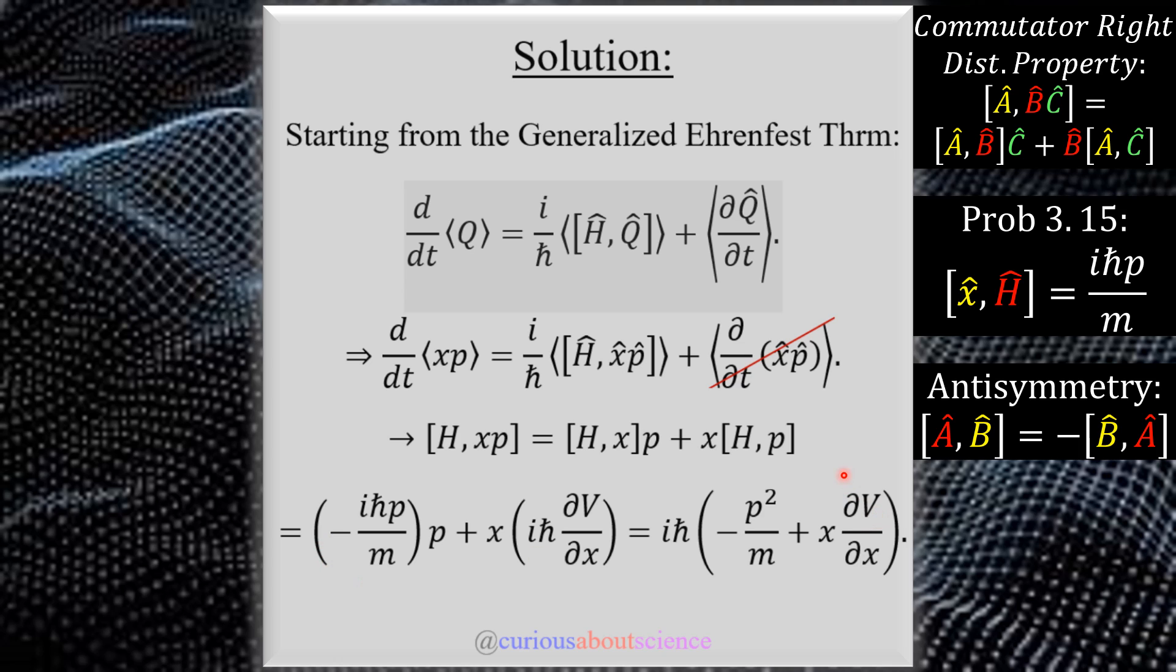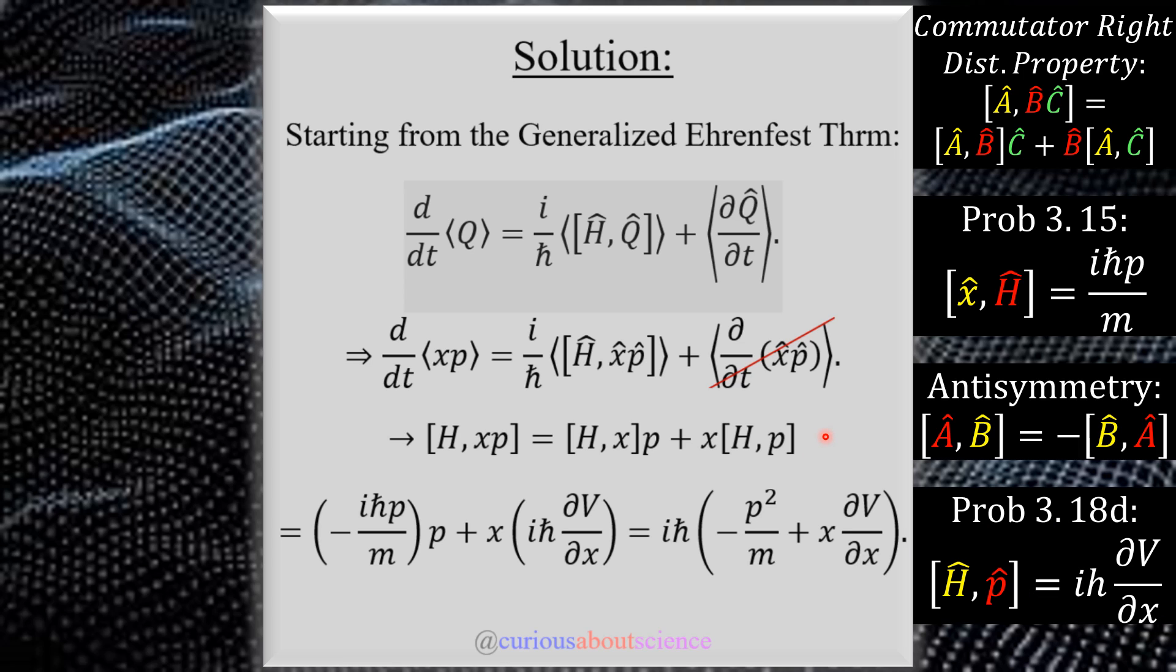Similarly, we solved for H and the commutator of H and p in problem 3.18. And we got that we had a result to iℏ dV/dx. So that's why we plugged this in here. So if you want, go make explicit reference to those questions. They are posted.